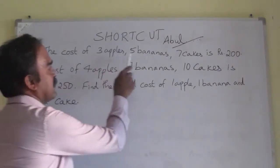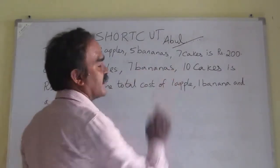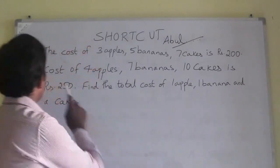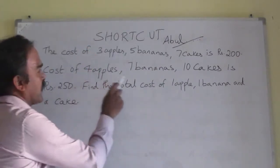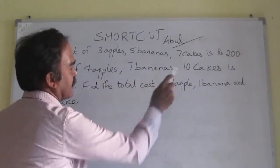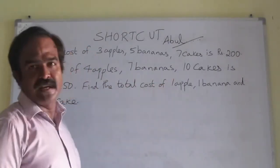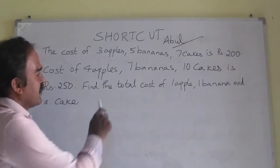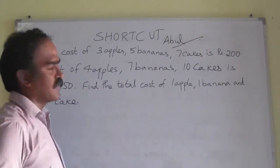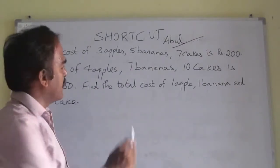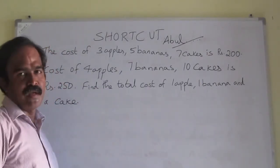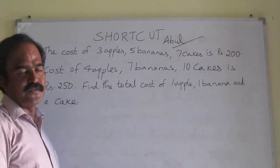Cost of 3 apples, 5 bananas, and 7 cakes is Rs. 200. Cost of 4 apples, 7 bananas, and 10 cakes is Rs. 250. Find the total cost of 1 apple, 1 banana, and a cake. How to do this?